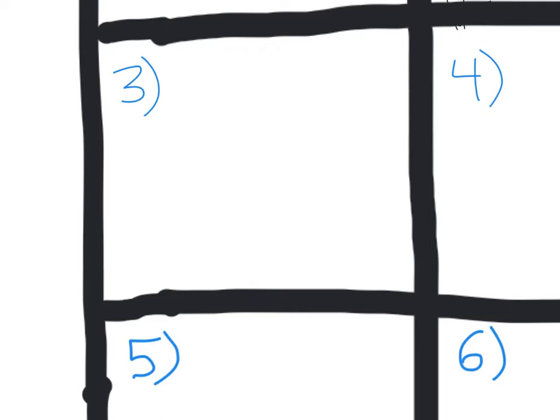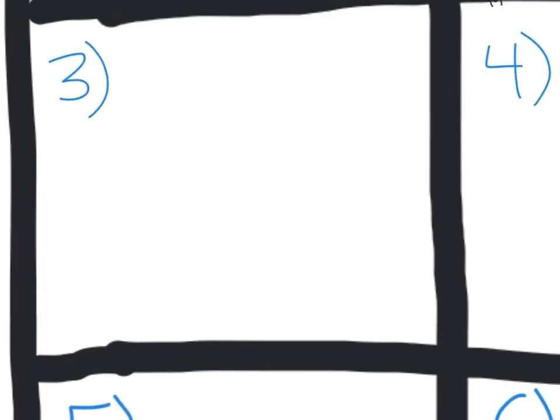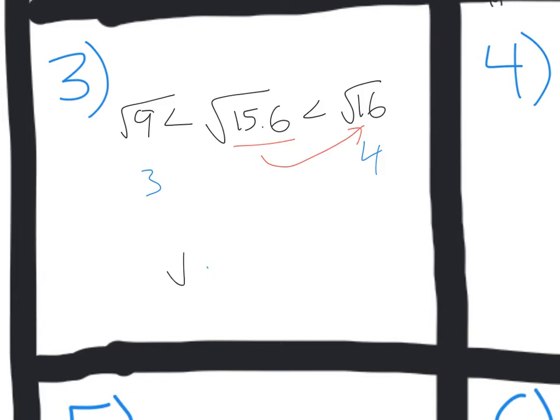Okay, number 3, a little bit trickier, not much. We've got square root of 15.6. That is between the square root of 16 and the square root of 9. I know that the square root of 9 is 3, and the square root of 16 is 4. 15.6, however, is a lot closer to 16 than it is to 9, so this square root is going to be approximately 4.